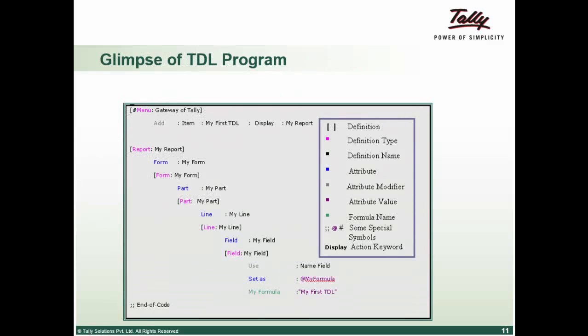This is a glimpse of a basic TDL program which you can have a look at. It has text within square brackets which is the definition. The one in pink color is the definition type, and the one on the right of the definition type is the name of the definition.